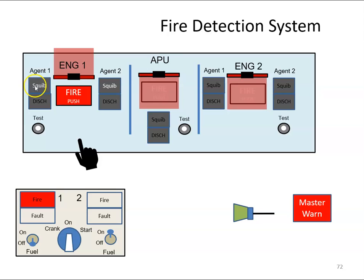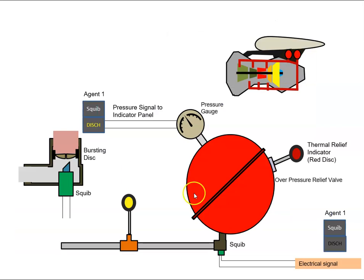When the button has been pressed, it has armed the squib, so the squib push button then illuminates. When the button is pressed, it sends an electrical signal to the squib.